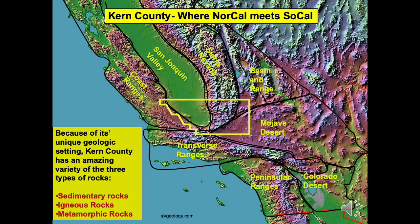For perspective, let's use a false color satellite image to show landforms of central and southern California. California possesses 11 major landform provinces, eight of which are outlined in black on the map. If you are a California native, you'll recognize province names such as the Sierra Nevada mountains, San Joaquin Sacramento Valley, also known as the Great Valley, and coast ranges. These three provinces are all northwest-southeast oriented and extend north nearly to the Oregon border.